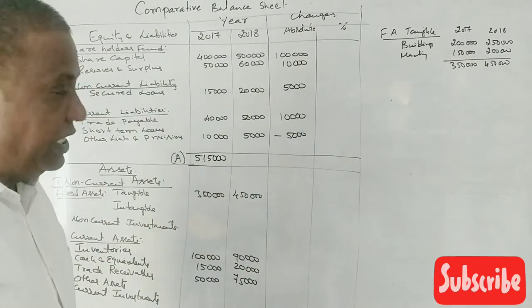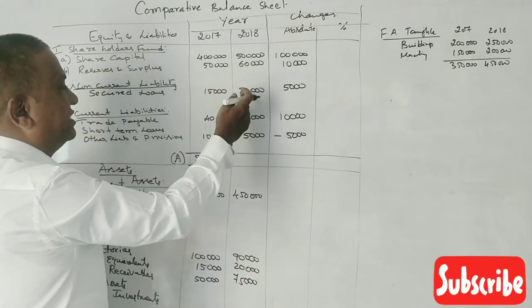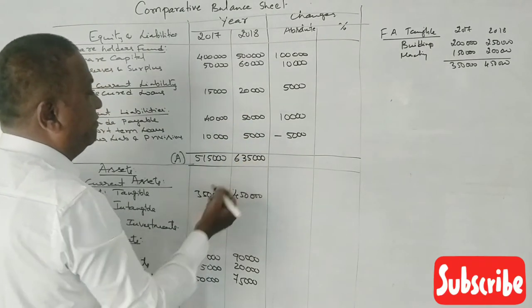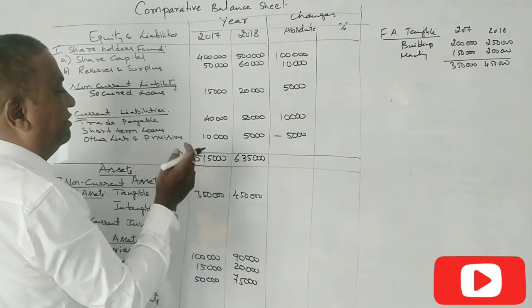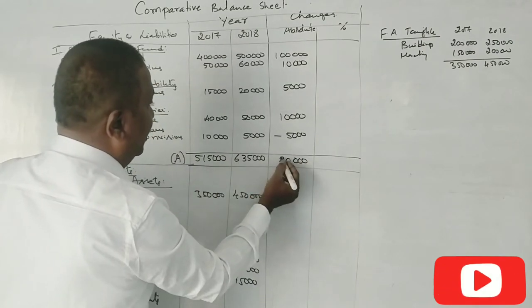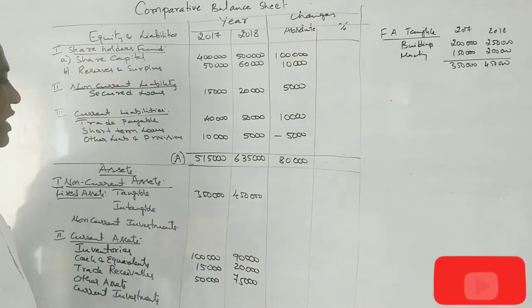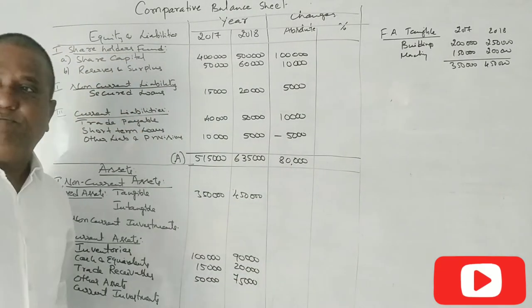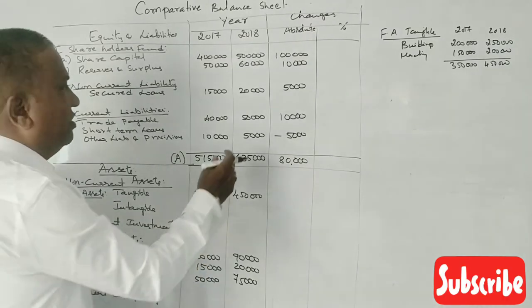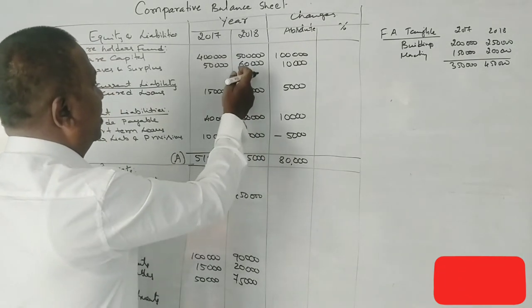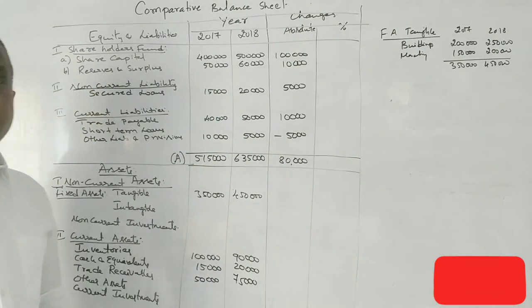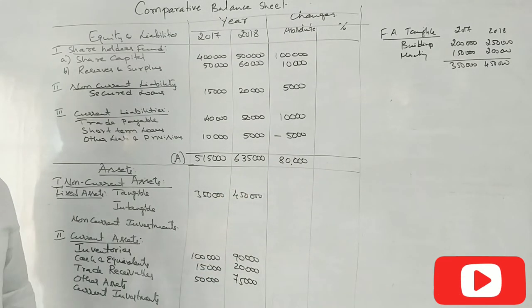Total liabilities side: 5,60,000 in 2017 and 6,35,000 in 2018. The answer gives 6,35,000 and 5,15,000, so total assets increase by 80,000. The answer is 80,000 rupees increase. Check the calculator for the change.